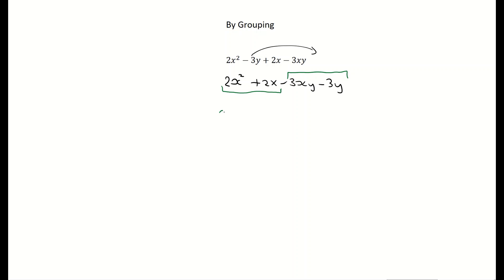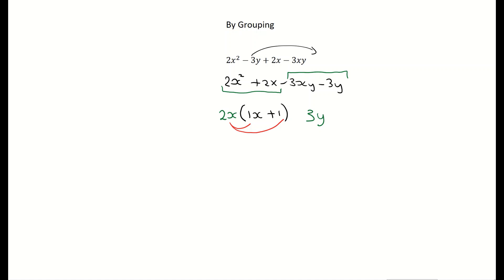Now grouping the first two: I can take out a 2 and an x, giving 2x as the factor. Using arrows: 2x by 1x gives 2x squared, and 2x by 1 gives 2x, so the bracket is (x + 1). For the last two terms, ignore the signs first — just focus on the numbers. I can see 3 and y are common, so the factor is 3y. Then 3y multiplied by x gives 3xy, and 3y multiplied by 1 gives 3y.